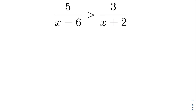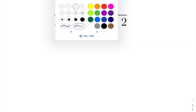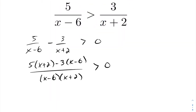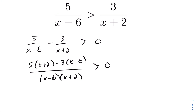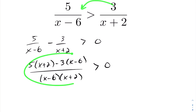This next rational inequality does not have absolute values. The strategy here is to bring everything to one side and get a common denominator. By having zero on the right-hand side, we can compare the expression to being positive or negative. That is the general approach when solving rational inequalities.